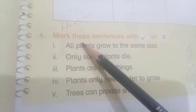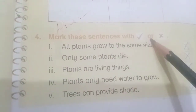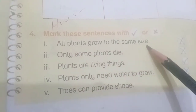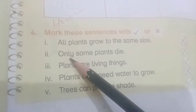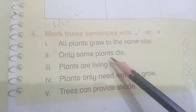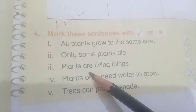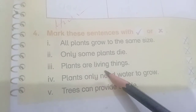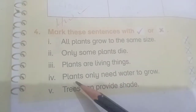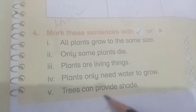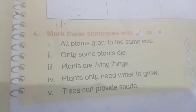Mark these sentences with a tick or cross. All plants grow to the same size — wrong. Only some plants die — wrong. Plants are living things — yes. Plants only need water to grow — wrong. Trees can provide shade — yes.